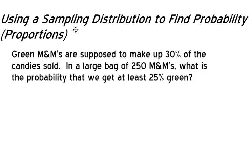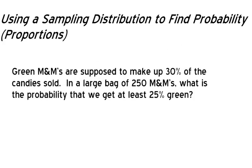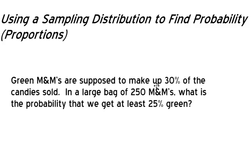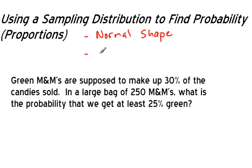Here's an example of how to use sampling distributions to find the probability of something. There are a couple of things about sampling distributions that we need to visit in order to use their properties. First of all, a sampling distribution takes on a normal shape — it's bell-shaped and symmetric. If we have a normal shape, we need two things to define a normal model: the mean and the standard deviation.